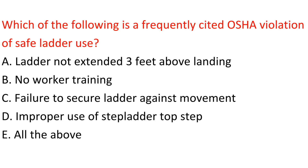Question: Which of the following is a frequently cited violation of safe ladder use? A. Ladder not extended three feet above landing. B. No worker training. C. Failure to secure ladder against movement. D. Improper use of step ladder top step. E. All the above. Answer: E. All the above.